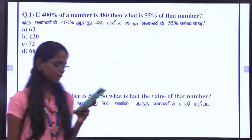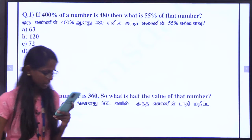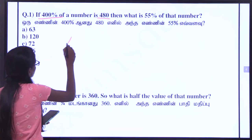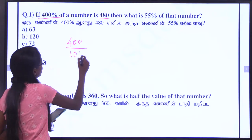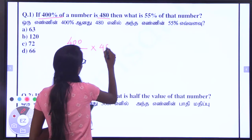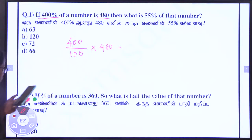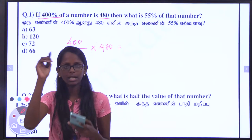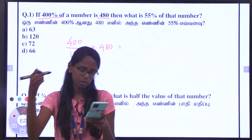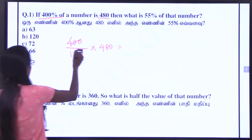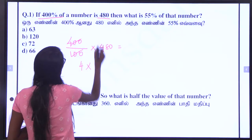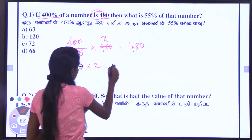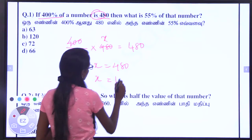Let's go. 400% of 480 — we will put it here. 400 divided by 100 into x is equal to 480, correct? So 4 into x is equal to 480. Therefore x is equal to 120.